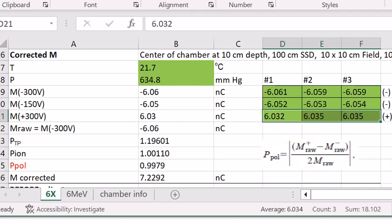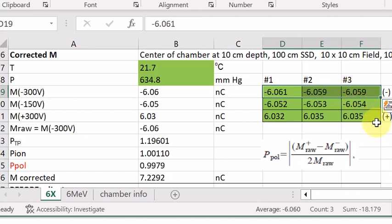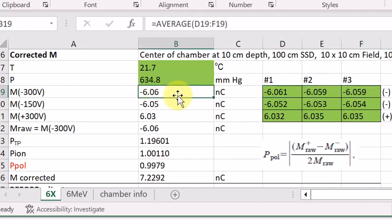Then we keep the chamber at the same location, but only changing the bias to negative 300 volts. We again take three measurements, they average to about negative 6.06 nanocoulomb.